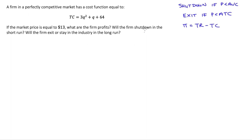In this video, I'm just going to go through a practice problem. A firm in a perfectly competitive market has a cost function: TC (total cost) equals 3Q squared plus Q plus 64. We're asked: if the market price is equal to $13, what are the firm's profits? Will the firm shut down in the short run? Will the firm exit or stay in the industry in the long run?